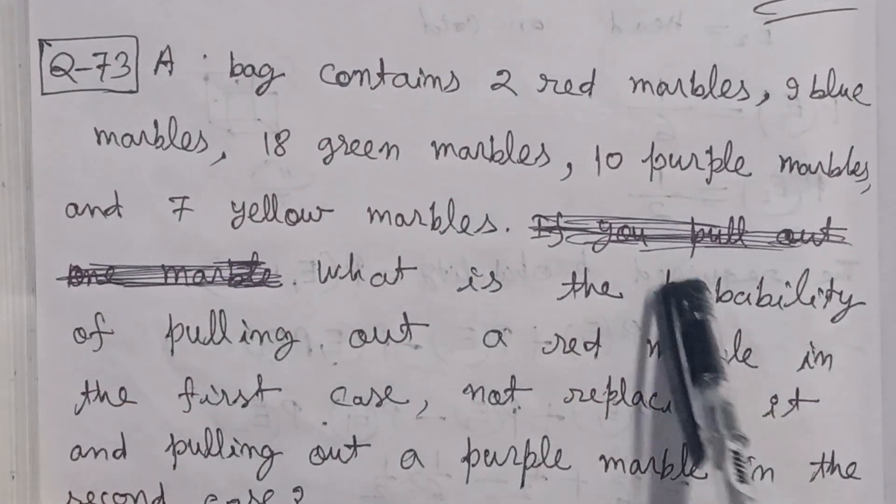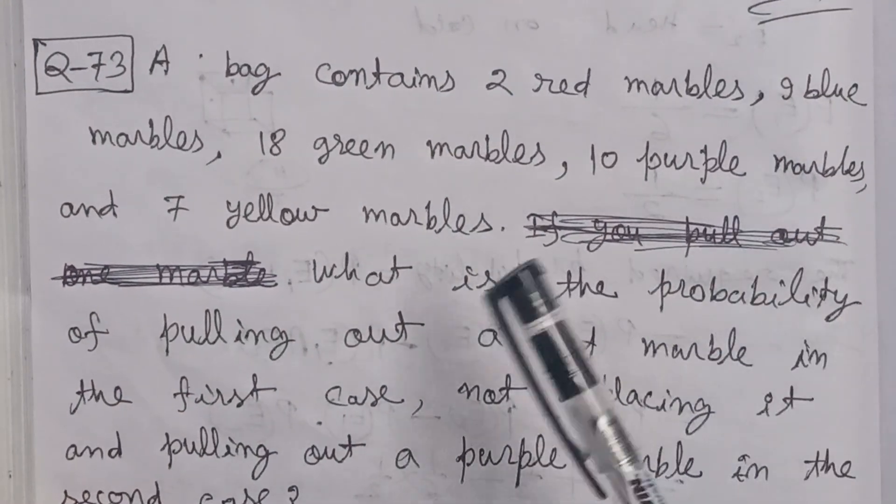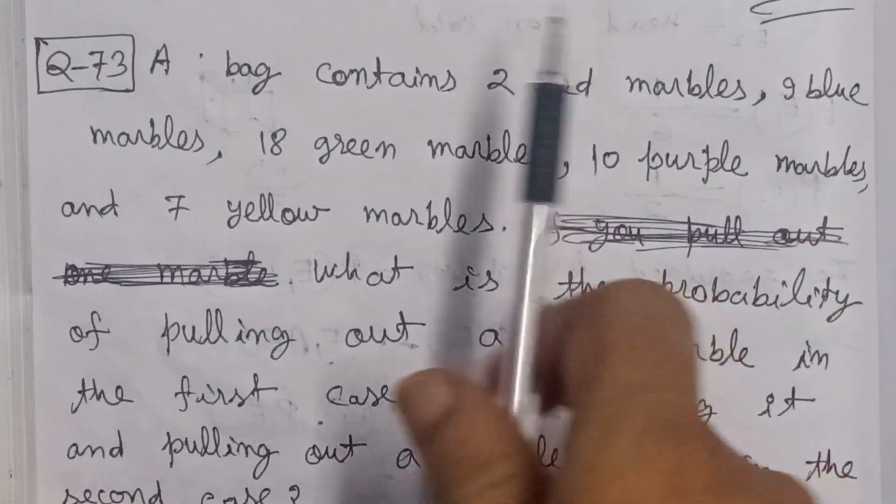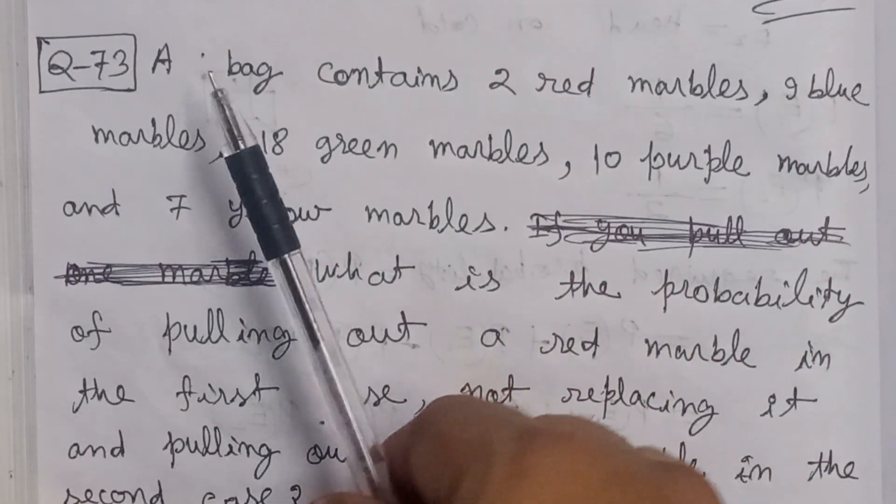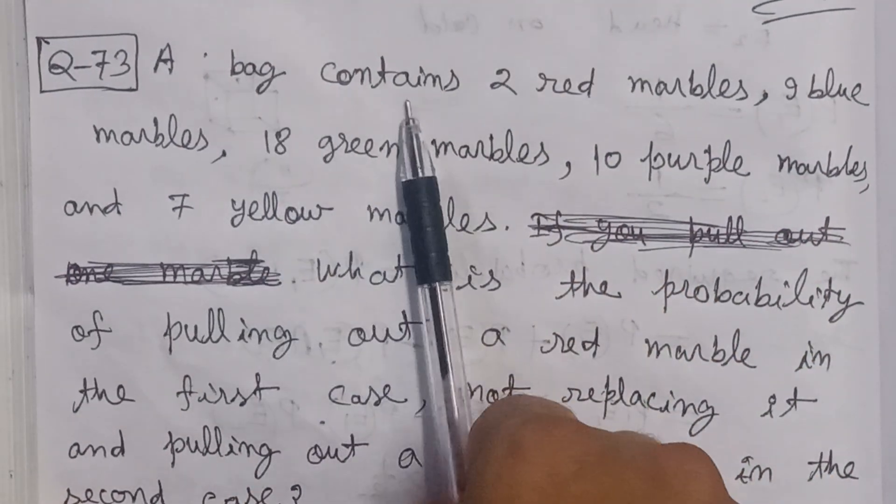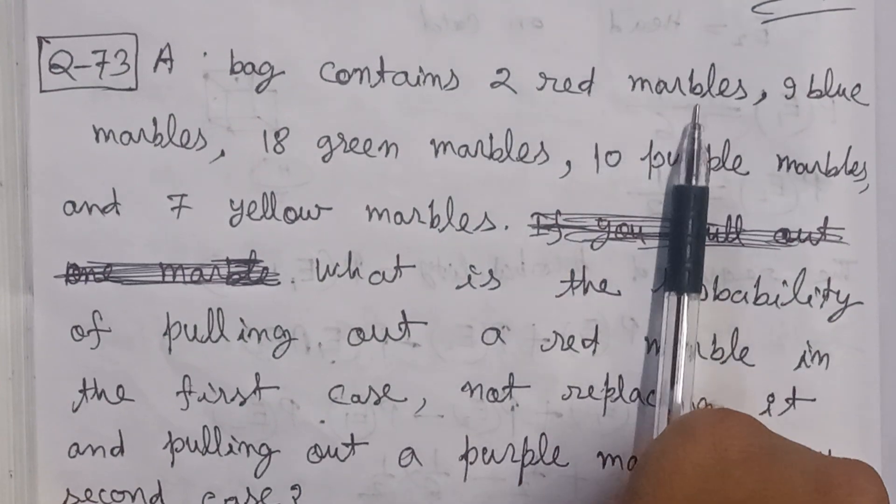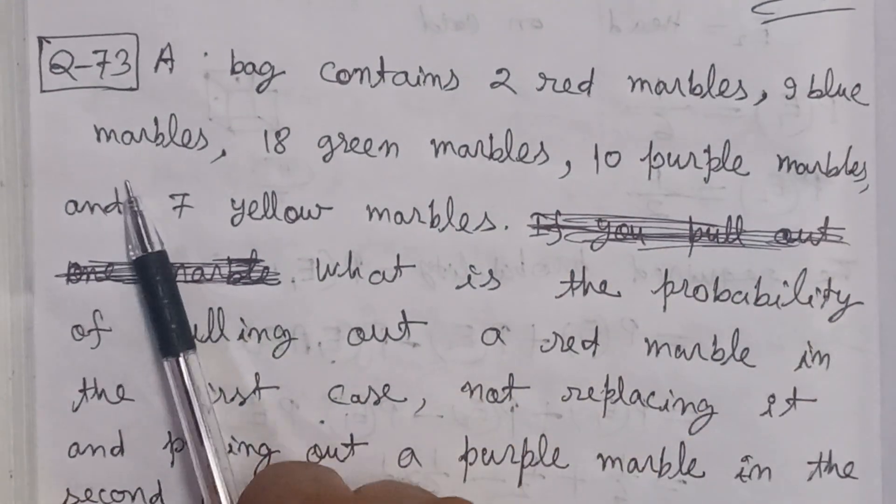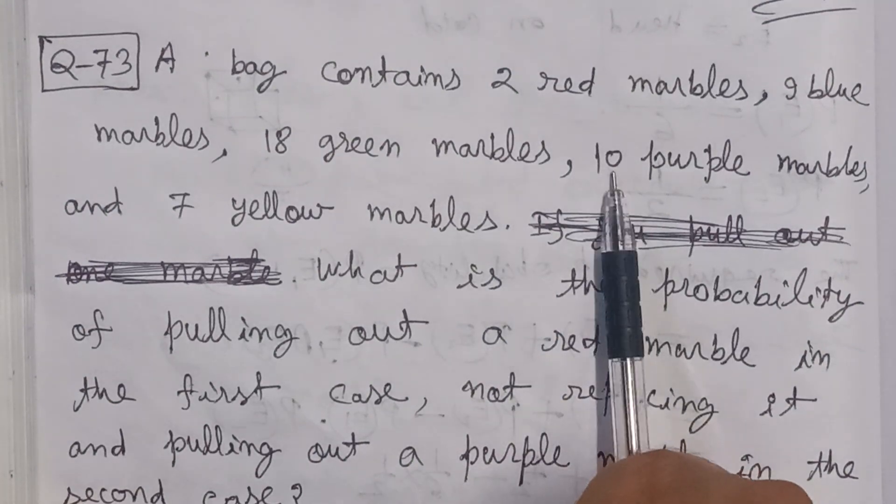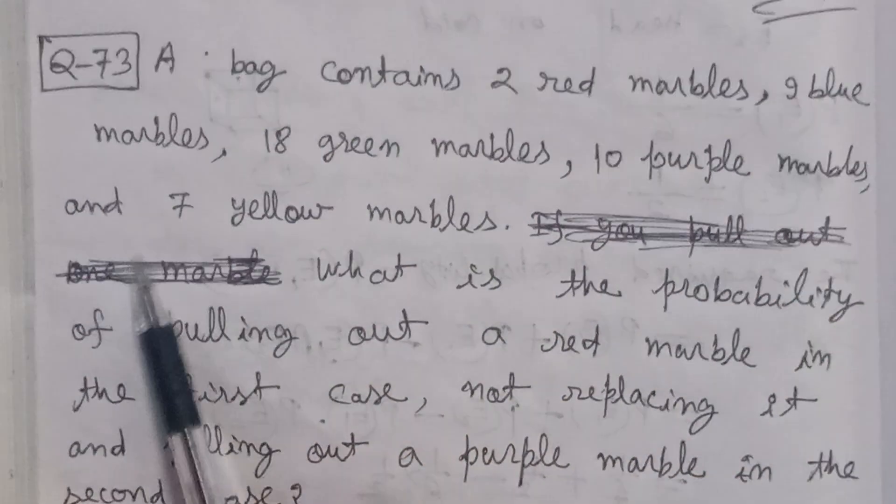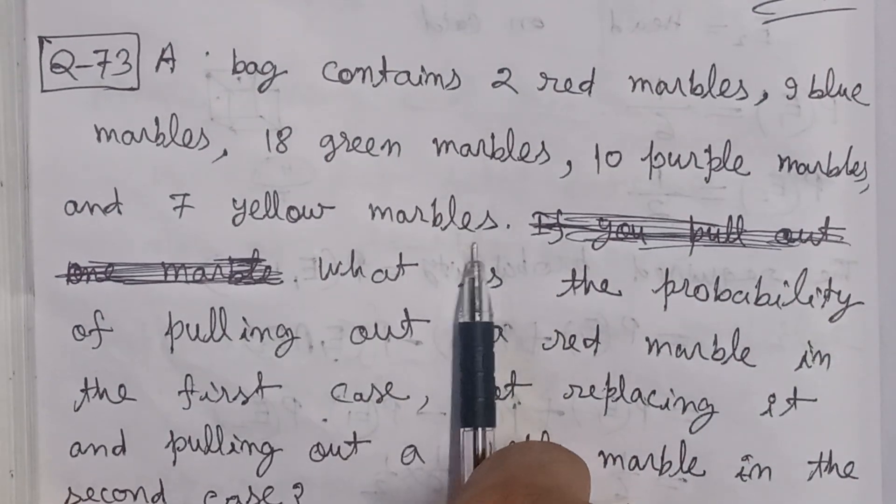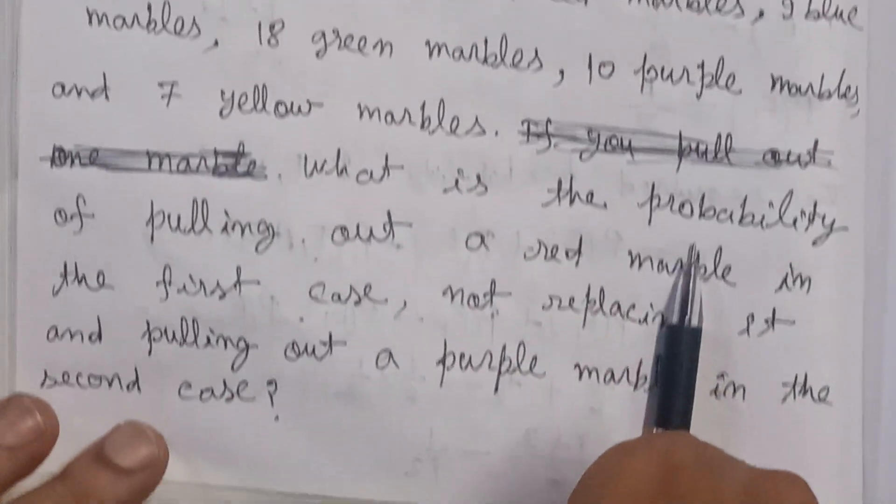بسم اللہ الرحمن الرحیم. This problem is about probability. A bag contains 2 red marbles, 9 blue marbles, 18 green marbles, 10 purple marbles, and 7 yellow marbles. What is the probability